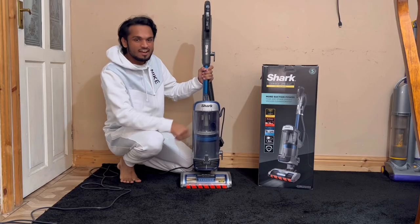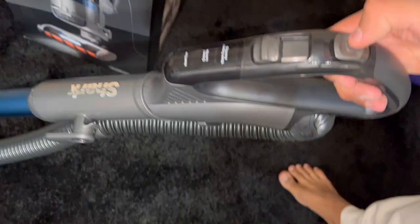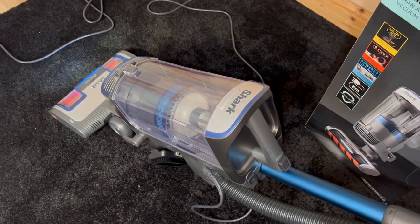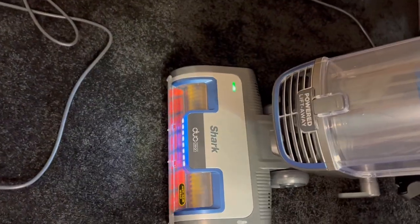Sharky's assembled now, let's give you a grand tour of the machine and a demonstration. Here are the handle controls: you have the power switch which activates the machine, the headlight, and the brush bar.